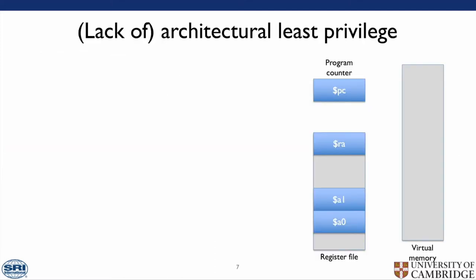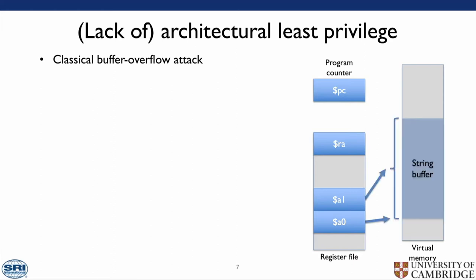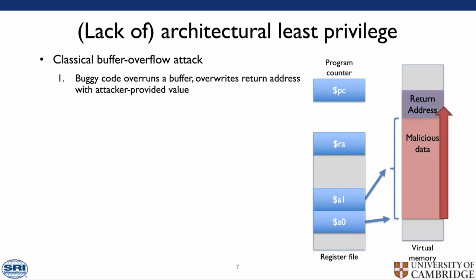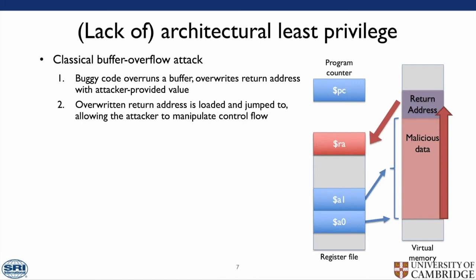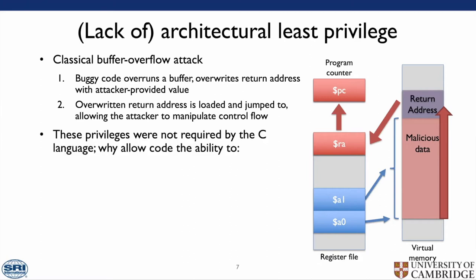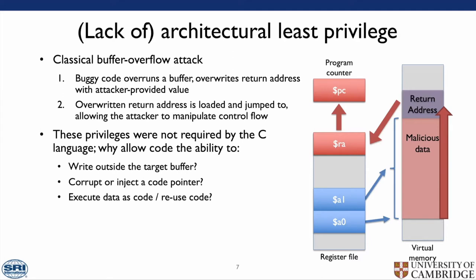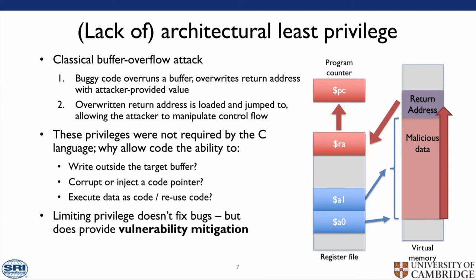We'll look at an example of architectural least privilege with a classic buffer overflow attack. We allocate a buffer on the stack where the return address is above the buffer. Malicious data written to the buffer may be written over the return address, which then gets loaded into the return address register. A non-function return is loaded into the program counter, at which point the CPU will execute from this malicious address. These privileges were not required by the C language — so why are we allowing code to write outside its target buffer, corrupt or inject code pointers, execute data as code, or reuse code in an unintended way? Limiting privilege doesn't fix bugs, but it does provide vulnerability mitigations.